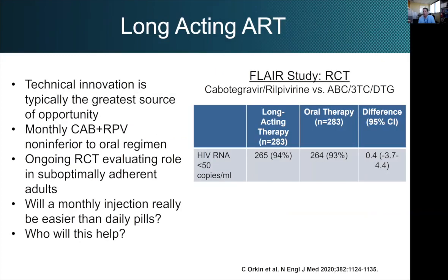Another major innovation to think about is long-acting antiretroviral therapy. The FLAIR study was a randomized controlled trial of cabotegravir injectable delivery versus continuation of the oral regimen — an equivalency study showing it works well. We currently have an ongoing RCT evaluating the role of long-acting agents in suboptimally adherent adults. The big question is whether giving people long-acting agents will improve viral suppression in those who are really struggling, and whether a monthly injection will actually be easier. I think technical innovation is typically the greatest source of opportunity in science, and this is a major potential advance.